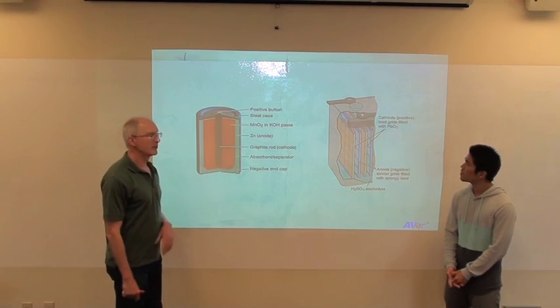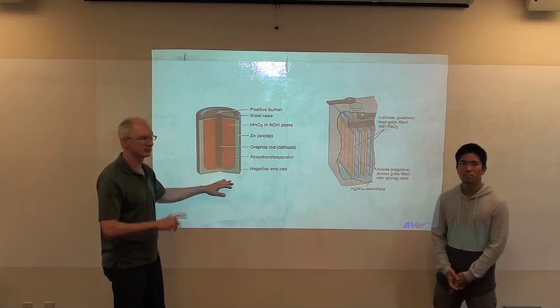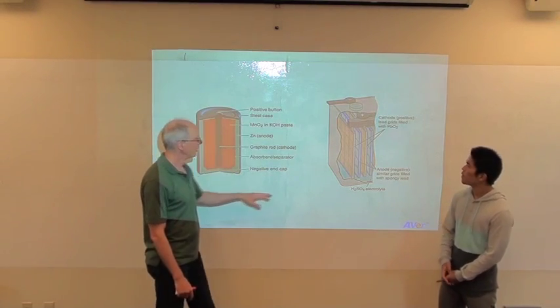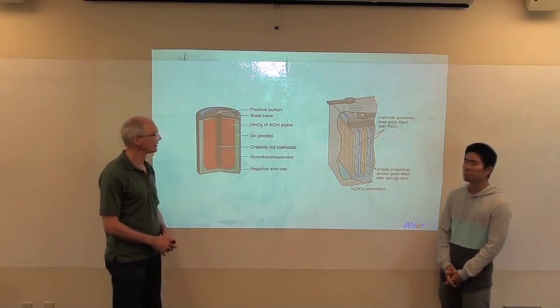These are diagrams of two old-style batteries. Here is an alkaline battery, the kind that goes in flashlights. And then this is a car battery. Yeah, exactly. A lead car battery.